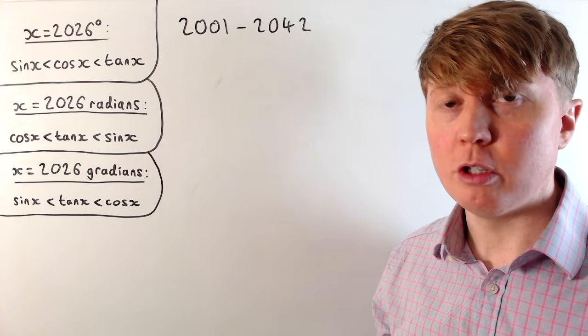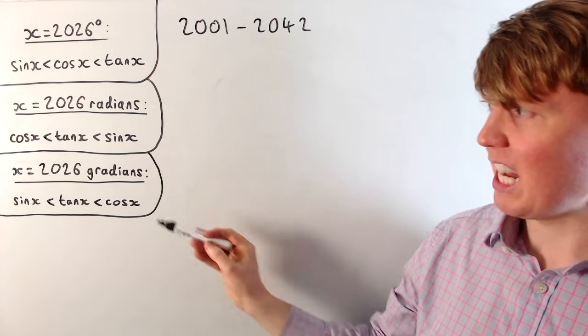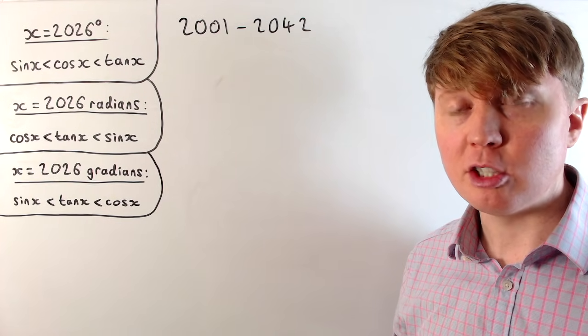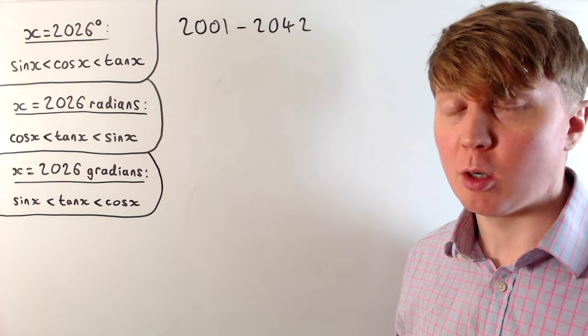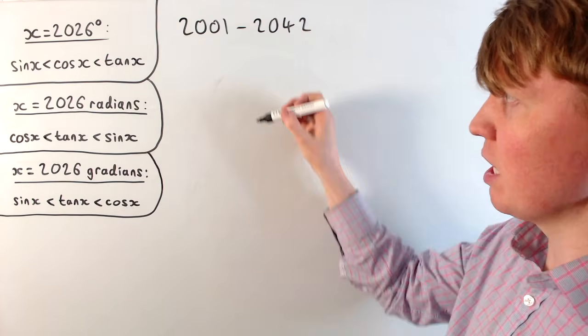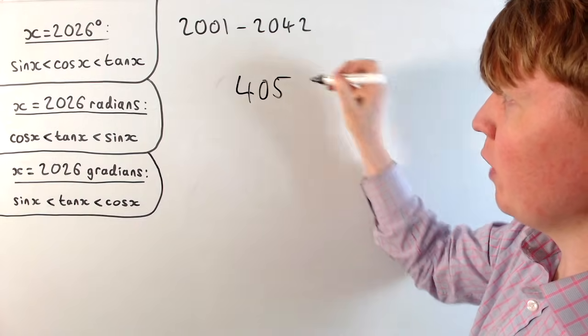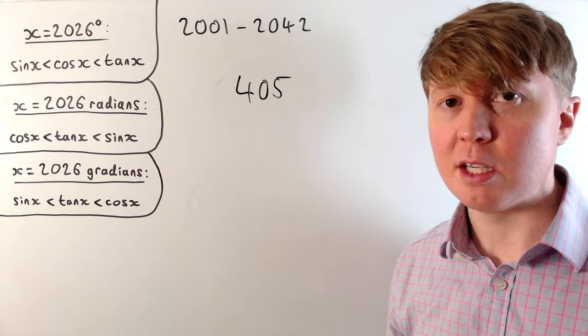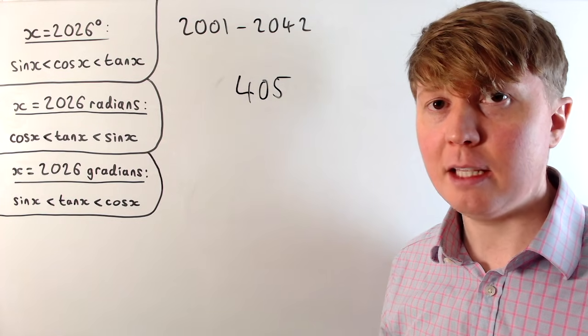So when did we last have the current order in degrees, radians, and gradians in this particular order? Well, it turns out this has only actually happened once before, since the year 1. So the last time this happened was in the year 405, where all of these inequalities were satisfied, and this is the only time this has happened, if we don't include negative years.